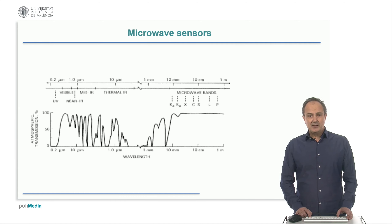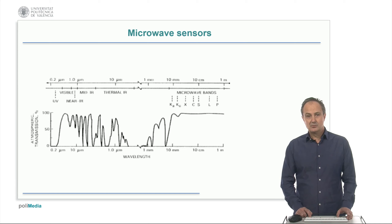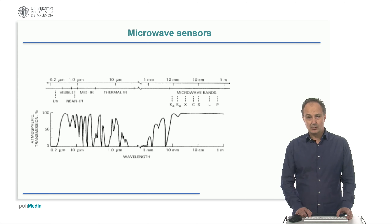In the electromagnetic spectrum, the microwave region ranges from wavelengths of about one millimeter to one meter. This region is located in an atmospheric window. There are two main types of microwave sensors: passive, those that don't emit energy themselves but are sensitive to the naturally emitted and reflected energy, and active sensors, which are able to emit and receive energy, so they don't depend on external radiation sources. The term radar — radio detection and ranging — is used for all active microwave sensors.